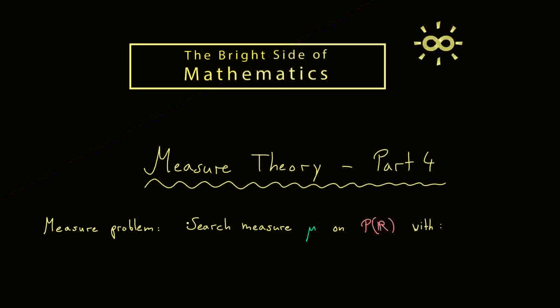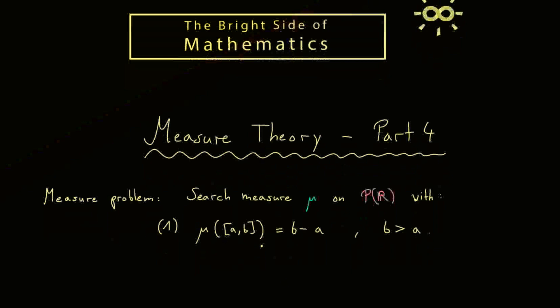Let me state the measure problem again. We search a measure mu on the power set of R — this is the one-dimensional case, so we first deal with the real number line before going to higher dimensions. We call this the measure problem because we want two natural properties fulfilled by mu. First, the measure of a normal interval should be just the length of this interval, so b minus a, where b is larger than a. This is what we want: to generalize the measuring of lengths.